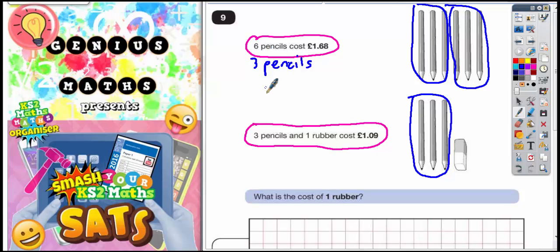So half of six pencils makes three pencils, so you'd have to do half of £1.68. Well, half of one pound is 50p, and half of 68p—well, half of 60 is 30 and half of 8 is 4, so 34p. So half of £1.68 is going to be 50p plus 34p. 50 plus 30 is 80, plus 4 is 84. So that's going to be 84p. So half of £1.68 is 84p.